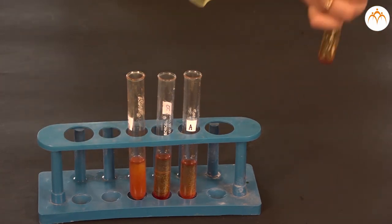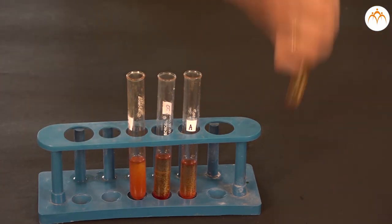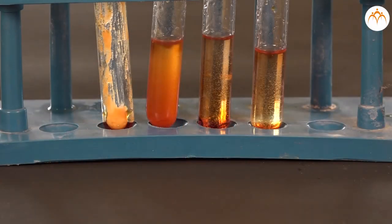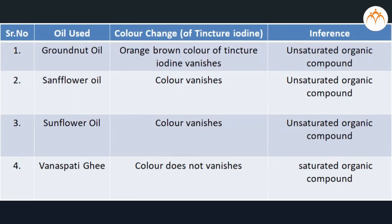The iodine test indicates the presence of multiple bonds in vegetable oils. In groundnut oil, safflower oil, and sunflower oil, the color vanishes. But in vanaspati ghee it remains as it is and the color does not change.